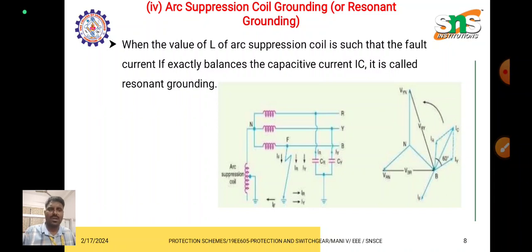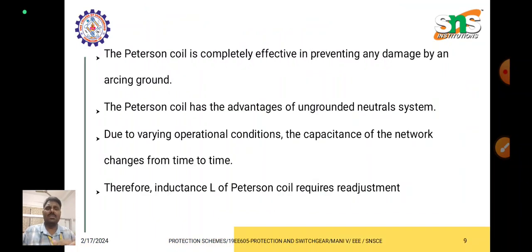Between the R and Y phases there is a capacitive charge. The fault current from the single line-to-ground fault travels to the arc suppression coil, then to the neutral, and then to the healthy area. This current flows in the opposite direction, allowing us to neutralize the fault and trip the faulted phase, thereby avoiding unbalanced current in the system.